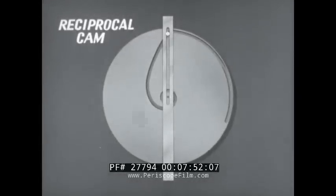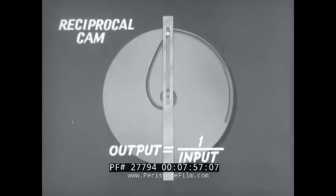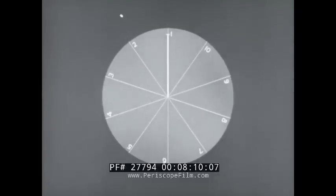In the reciprocal cam, the output is equal to one divided by the input. The working surface is constructed by plotting points on radii. This distance on line one represents one. Half this distance on line two represents the reciprocal of two, or one half. One third on three, and so on.